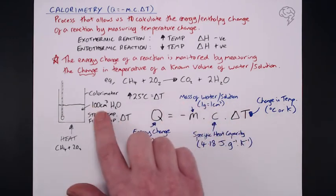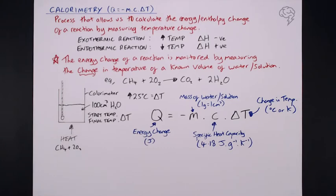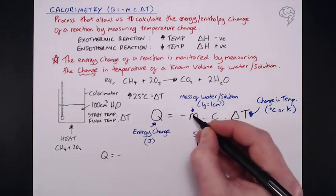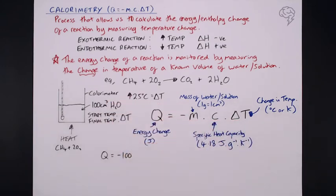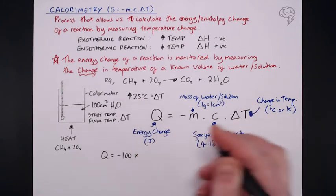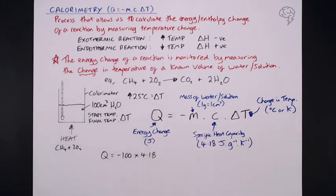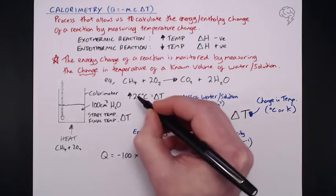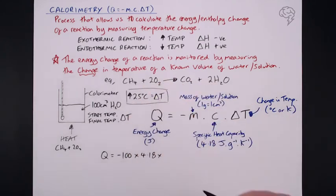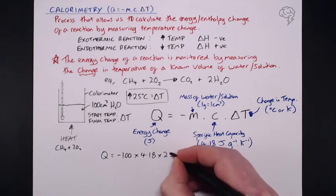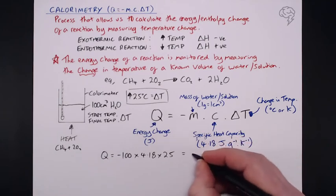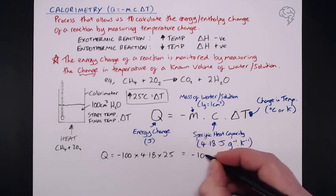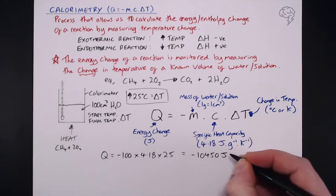So, let's take a look and see how we work out what we've done here. So, as I said, the energy change here, Q, that's going to equal minus M. Now, our mass of water is 100, because we have 100 centimeters cubed. Multiplied by the magic number, 4.18 is our specific heat capacity. Of course, our change in temperature, I stated before, was 25 degrees Celsius.